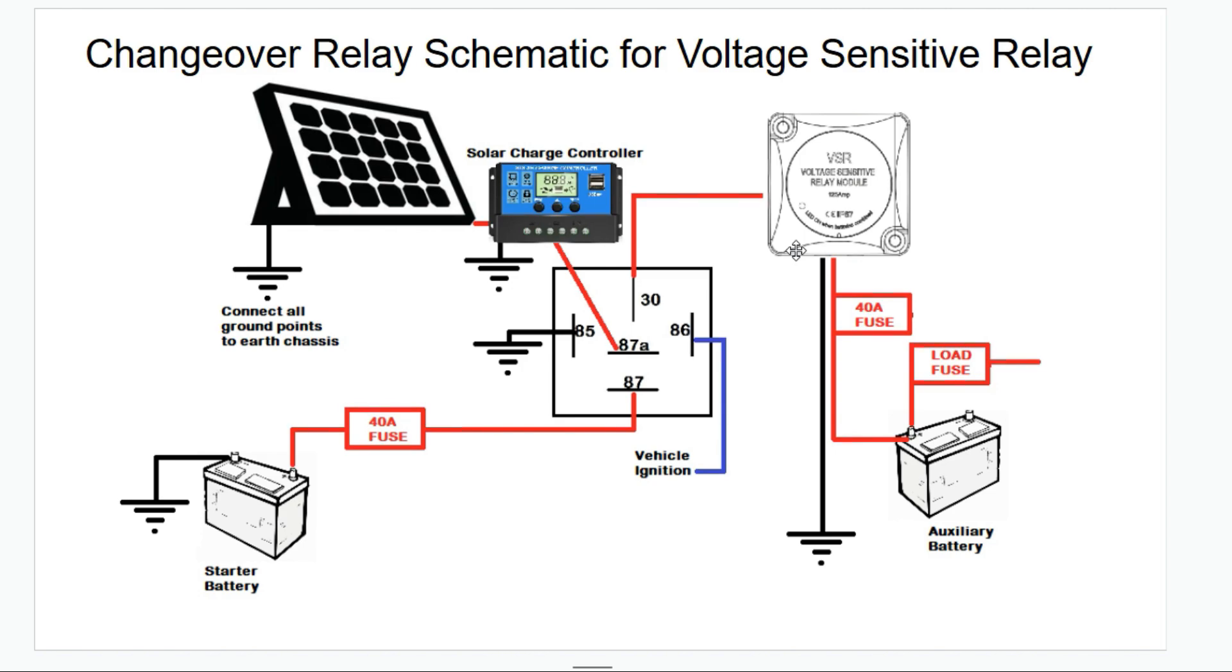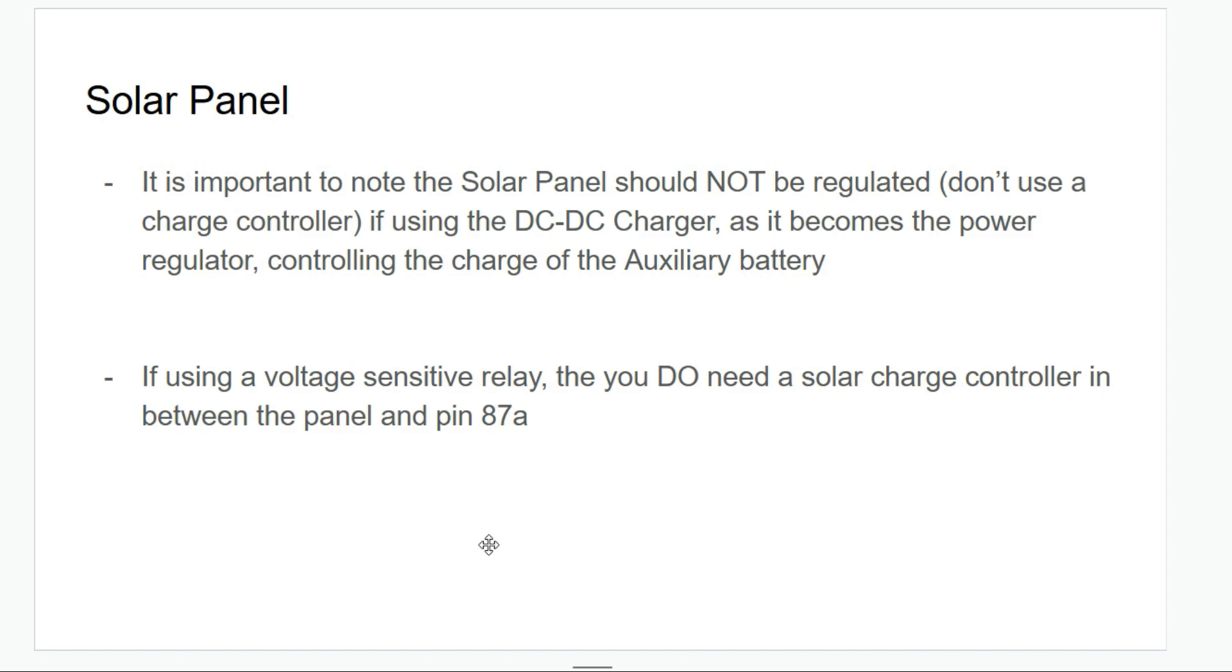It's important to note the solar panel should not be regulated for the DC to DC charger, but it should be regulated if you are using a solar charge controller, and the solar charge controller should be in between the solar panel and pin 87A.